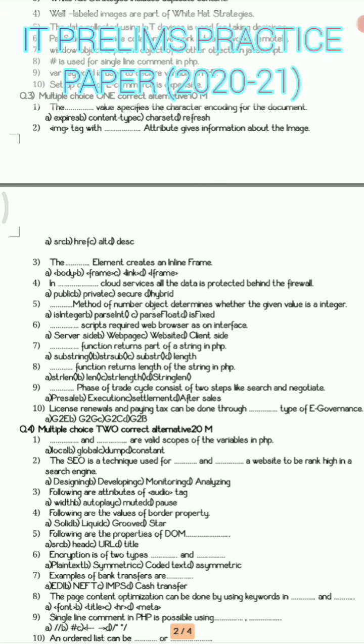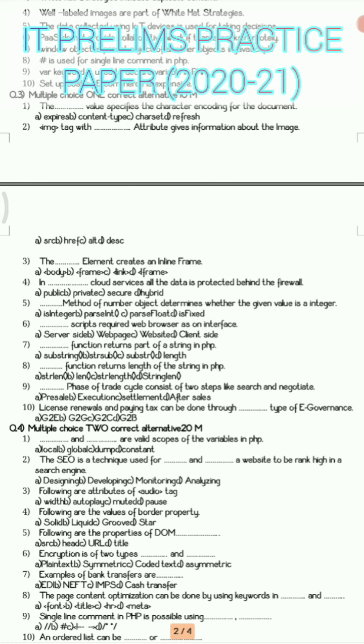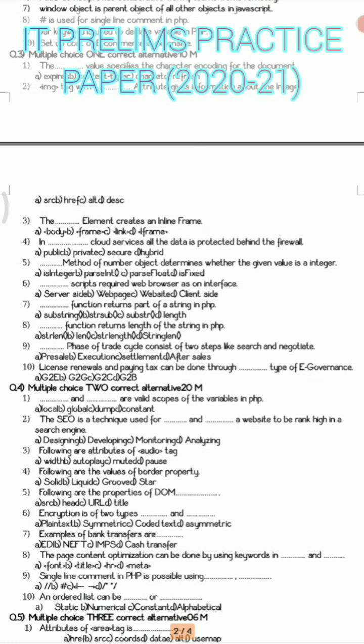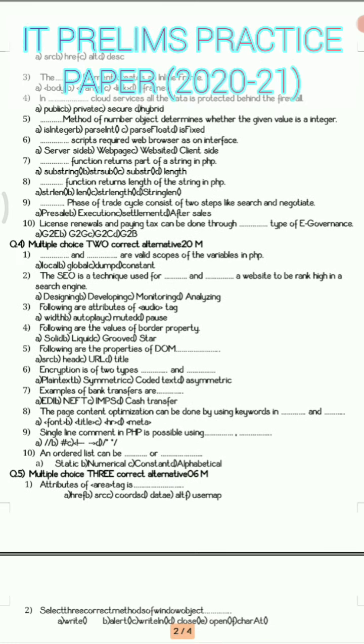After that we have question number 4. Question number 4 carries total 20 marks where you can see it is multiple choice questions with two options correct, means you have total four to five options and out of that two options are your correct answers. There are 10 questions, one question carries two marks each.